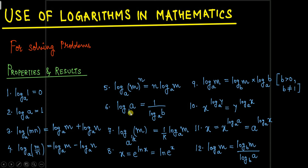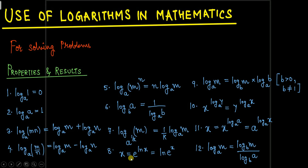Property 6: log a to the base b equals one upon log b to the base a — it becomes a reciprocal when you interchange the base and the argument. Property 7: log(m^(1/k)) to the base a equals (1/k) times log m to the base a. Property 8: x equals e to the power of ln x — taking natural log on both sides, ln e to the power of ln x gives ln x, since ln e equals 1.